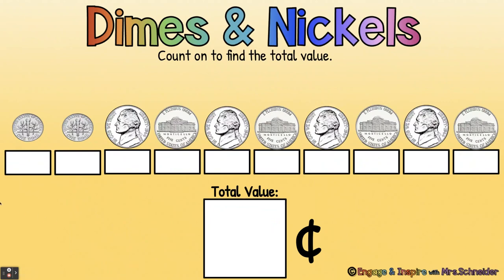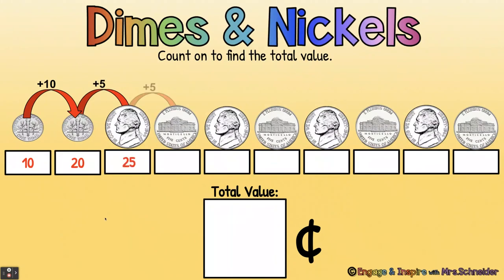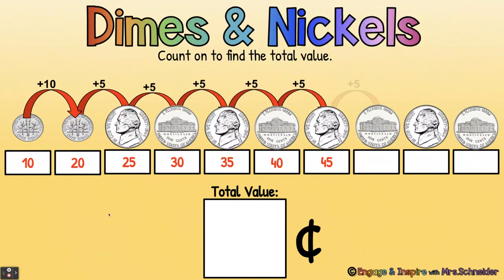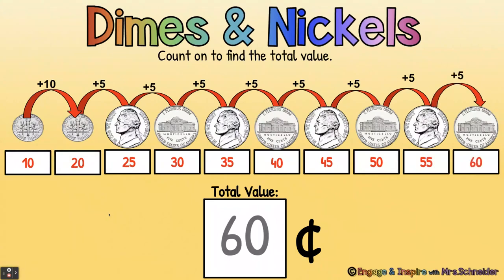Okay, one more time. Ten, twenty — now we're switching to nickels, so count by fives: twenty-five, thirty, thirty-five, forty, forty-five, fifty, fifty-five, sixty. Sixty cents is the total value.